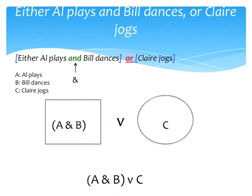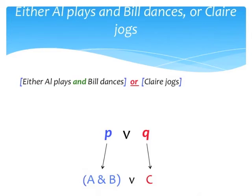So P would be substituted with 'Al plays and Bill dances,' and Q would be substituted with 'Claire jogs,' and then you only have the V in the middle. Taking into account that a is Al plays, b is Bill dances, and c is Claire jogs, we see how we can get (a & b) v c by uniform substitution of letters — we can get from the general form P-v-Q to our sentence. So (a & b) v c is actually a substitution instance of P-v-Q, and in a derivative way, the sentence 'either Al plays and Bill dances or Claire jogs' is also a substitution instance of the general form of disjunction.